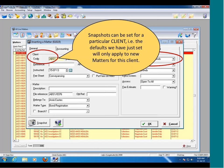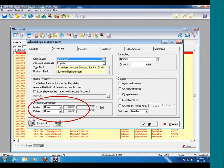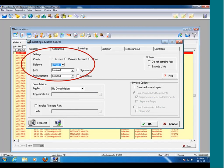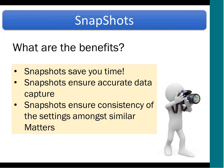We've just looked at the general tab, but the same applies for the accounting tab — for example, to set a specific collection commission for all your matters. Likewise on the invoicing tab, if you've got a specific client that requires pro forma accounts or no invoicing, you can set that, click on snapshots, and it will remember it every time you take on a new matter. The benefits of snapshots: it saves you time, ensures accurate data capture, and ensures consistency of settings among similar matters.